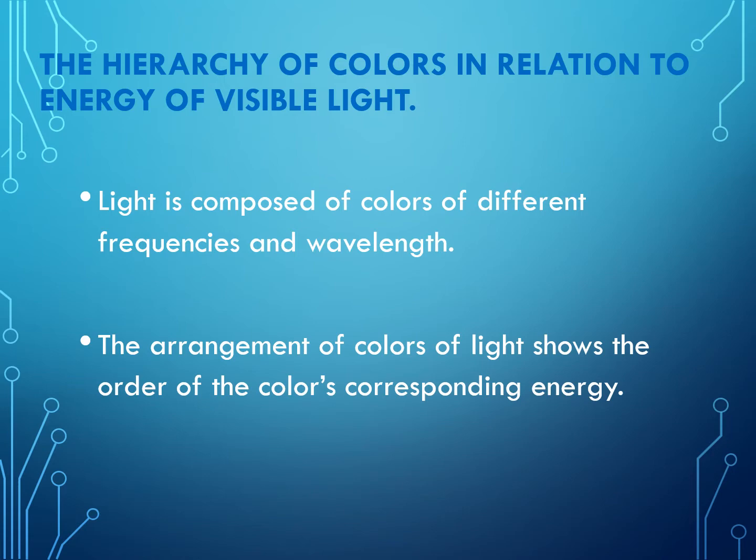Light is composed of colors of different frequencies and wavelengths. You have to understand this very well — the frequencies and wavelengths. Another characteristic of light is that the arrangement of colors shows the order of the color's corresponding energy. So it means to say that light has frequencies, wavelength, and energy.